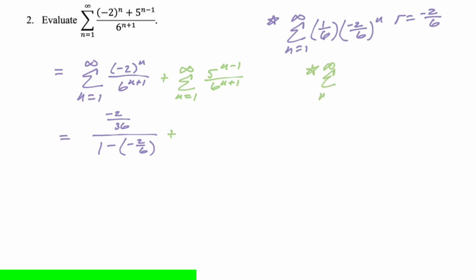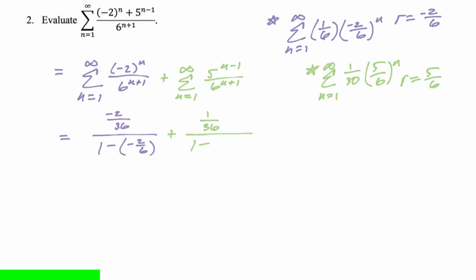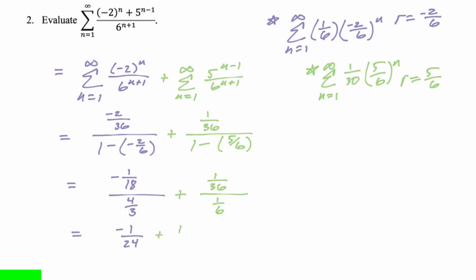For the second part, rewriting: 5 to the negative 1 times 1/6 gives 1/30, and then (5/6) to the n. So r is 5/6, absolute value less than 1, this converges. The first term is 1/30 times 5/6, so 5/180 = 1/36. Divided by 1 minus 5/6. After all the arithmetic: negative 1/24 plus 1/6 equals 3/24 minus 1/24, which is ultimately 1/8.